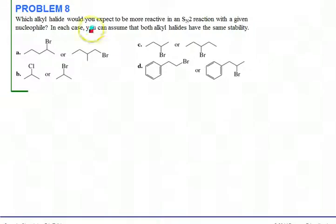Well, for A, you would expect the primary alkyl halide to be more reactive because this methyl group here on the secondary alkyl halide would provide some steric hindrance.